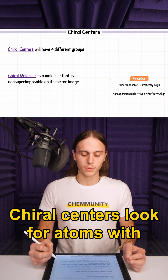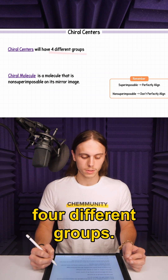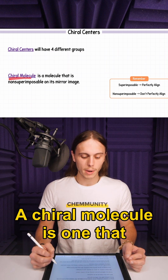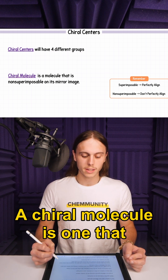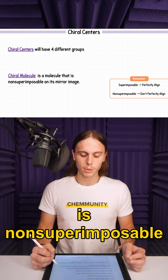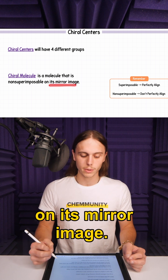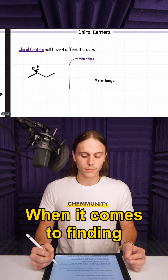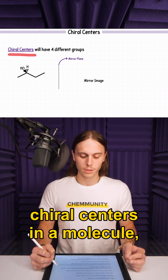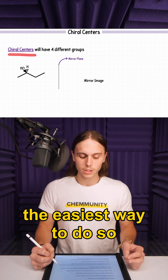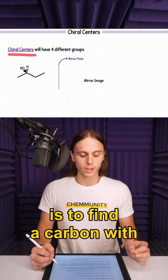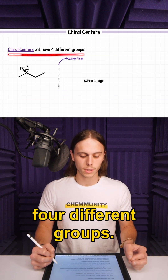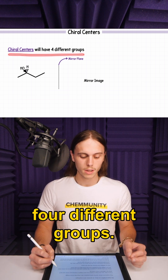Chiral centers — look for atoms with four different groups. A chiral molecule is one that is non-superimposable on its mirror image. When it comes to finding chiral centers in a molecule, the easiest way to do so is to find a carbon with four different groups.